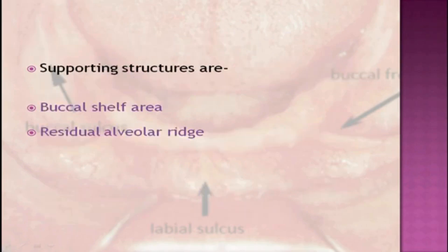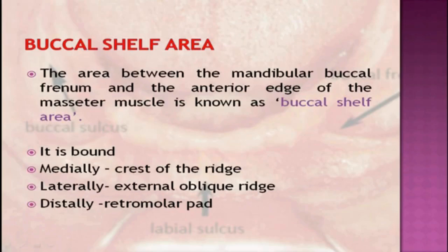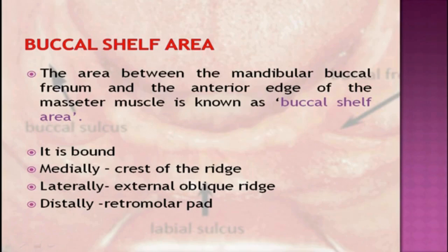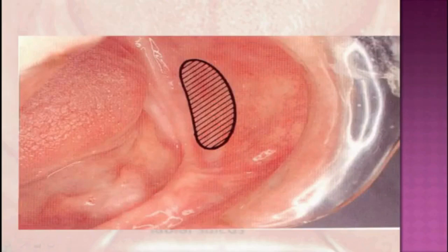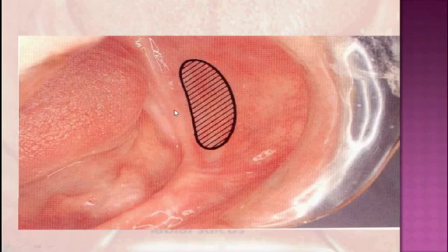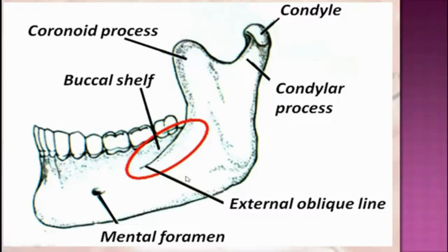The supporting structures are the buccal shelf area and the residual alveolar ridge. The buccal shelf area is the area between the mandibular buccal frenum and the anterior edge of the masseter muscle. It is bounded medially by the crest of the ridge, laterally by the external oblique ridge, and distally by the retromolar pad. According to the Syllabus of Complete Dentures by Charles Heartwell, the bone in this region is dense and covered by cortical bone, as the resultant forces of elevator muscles are directed to this area and the trabeculation is arranged to best resist these forces.